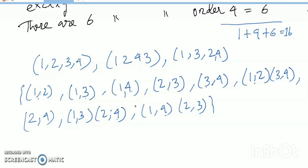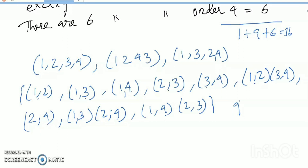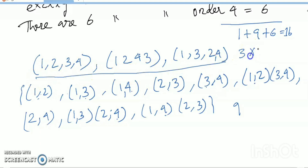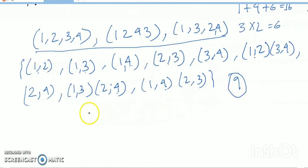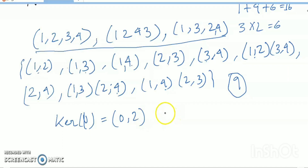When ker(φ) = Z4, you get the trivial homomorphism, contributing 1. When ker(φ) = {0,2} and image(φ) is isomorphic to Z2, elements 0 and 2 are sent to the identity. Overall: order-4 gives 6, order-2 gives 9, and total is 6 + 9 + 1 = 16.